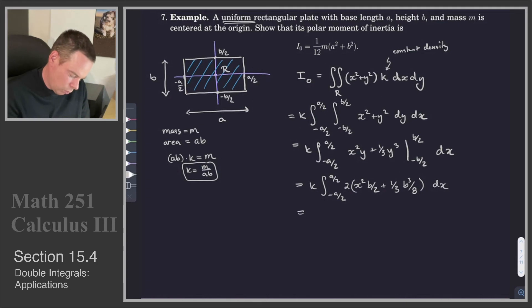So I'll bring that 2 out front, 2K. Then we're going to integrate with respect to X. That becomes (1/3)x³(B/2) + (1/3)(B³/8)x. And that's going to be from -A/2 to A/2.